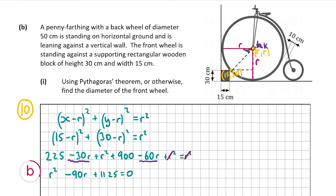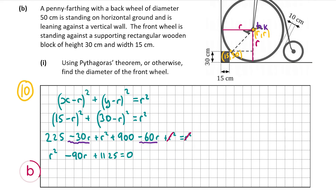This is a quadratic trinomial which we can factorize and solve for r. Factorizing gives r minus 75 times r minus 15 equals zero. So either r minus 75 equals zero, giving r equals 75, or r minus 15 equals zero, giving r equals 15.